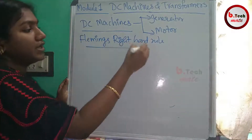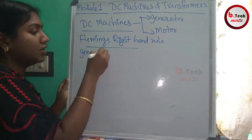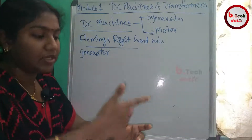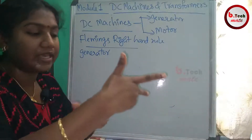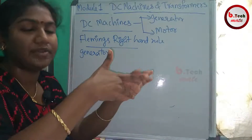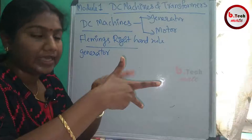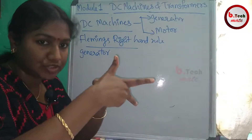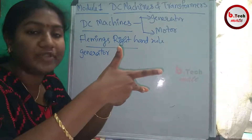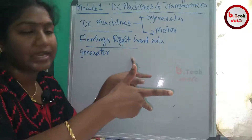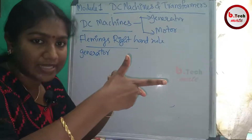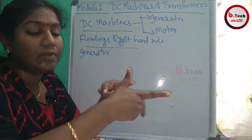Fleming's Right Hand Rule is applied to the DC generator. Hold the forefinger, middle finger, and thumb mutually perpendicular to each other at 90 degrees. The forefinger indicates the direction of the magnetic field, the thumb indicates the direction of motion of the conductor, and the middle finger indicates the direction of the induced EMF or current.